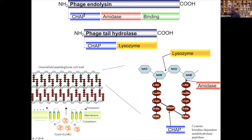The endolysin has two enzymatic domains — a cysteine-histidine amidohydrolase peptidase and an amidase — and a cell binding domain, which is necessary to localize the endolysin in the peptidoglycan where it's needed, rather than leaking out into the environment. In the tail tip hydrolase, you can also see two enzymatic domains, and this diagram shows the particular bonds that these various enzymatic domains act upon in the peptidoglycan.